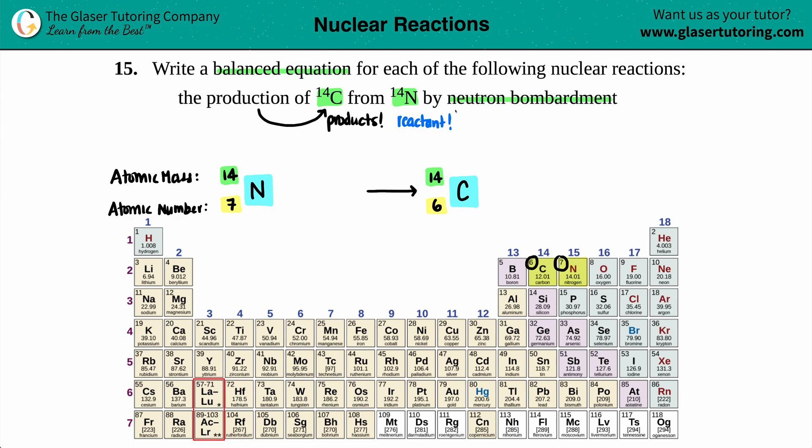We did the nitrogen. Now we have to attack the neutron bombardment. Now, if you're being bombarded with something, that means too much stuff is coming in, right? If you're being bombarded with information, too much information is coming in. And always with this wording, if they're talking about a bombardment, that means that your particle is coming in on the reactant side. That's what you're starting with. So the particle is on reactant side.